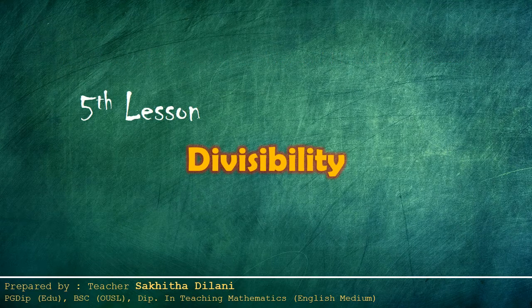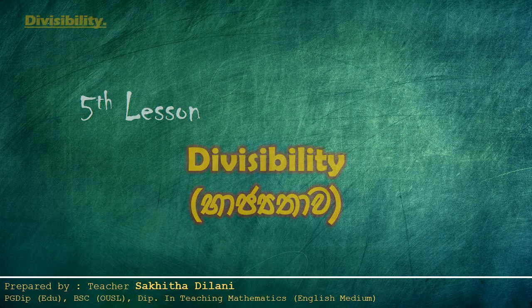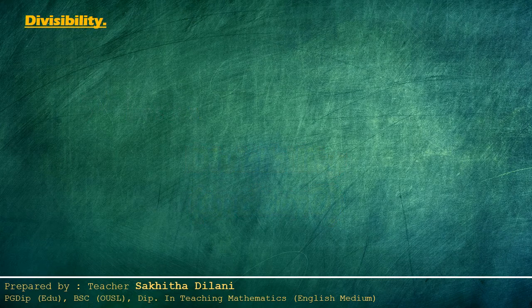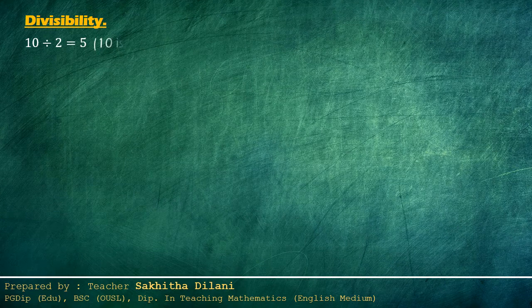The fifth lesson: divisibility. When ten is divided by two, it gives five and there is no remainder. Then we say ten is divisible by two.